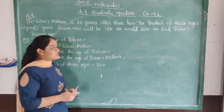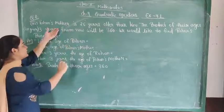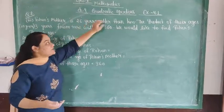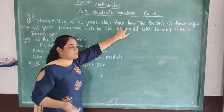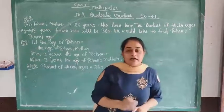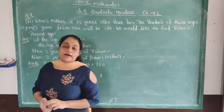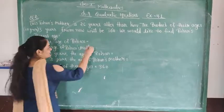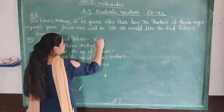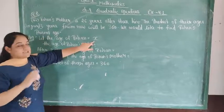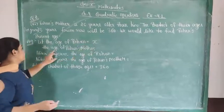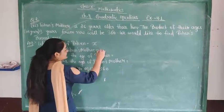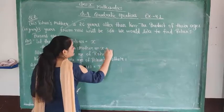So first of all we will be saying, Roman's mother is 26 years older than him. First of all, we would like to ask Roman's age. Let the age of Roman, Roman's age is x. Now Roman's mother is 26 years older than him, so the age of Roman's mother is x plus 26.